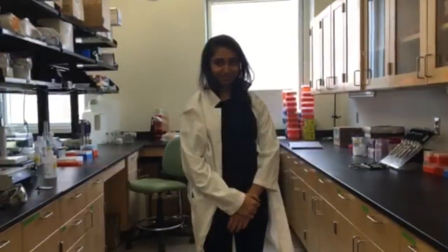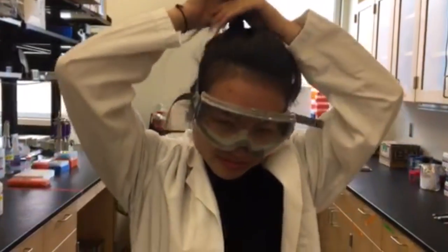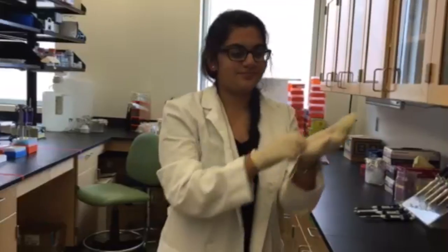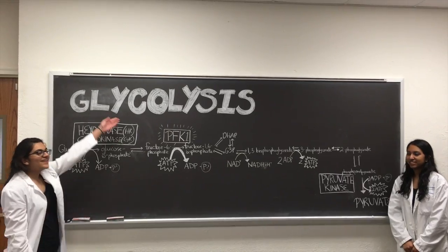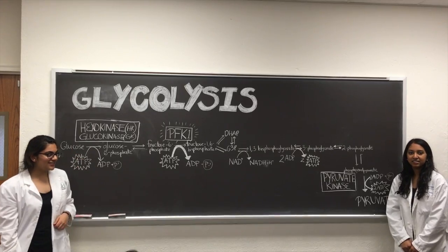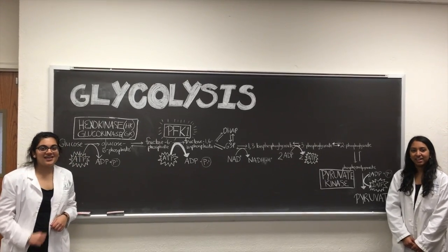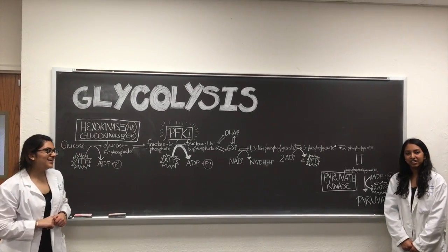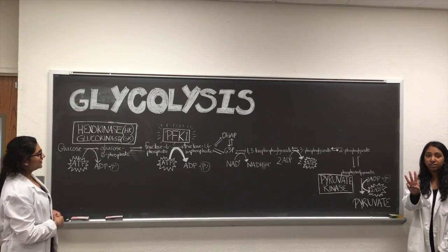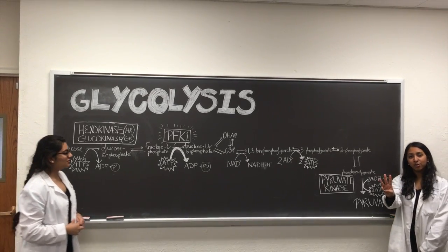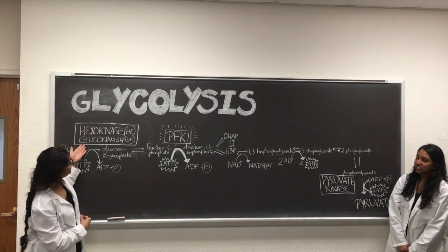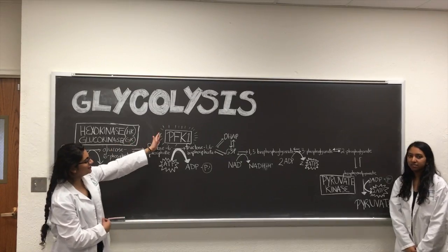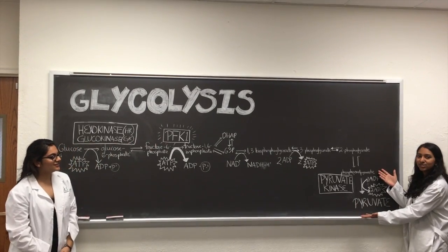Let's get down to business to create a drug. Think about glycolysis as step number one. There are three regulatory steps: HK, GK, PFK, and pyruvate kinase 2.